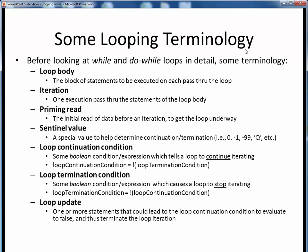Before we get to any examples of the two kinds of loops, let's first establish some common terminology. The loop body is the block of statements which gets executed on each pass through the loop. An iteration is simply one execution pass through the loop body, or loosely referred to as one loop or one pass.